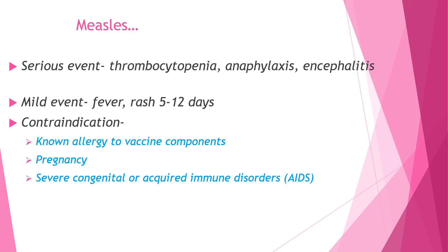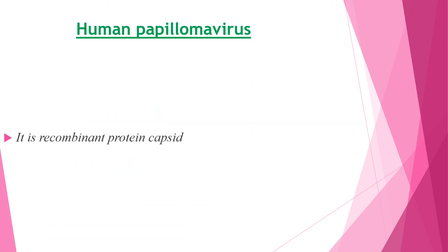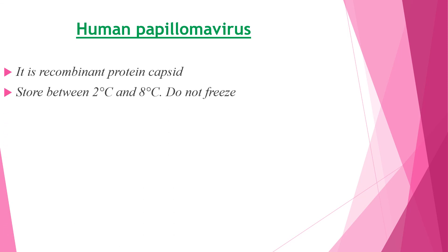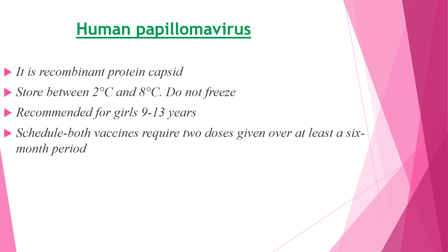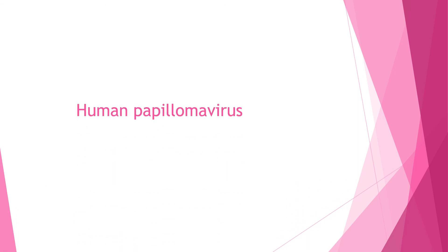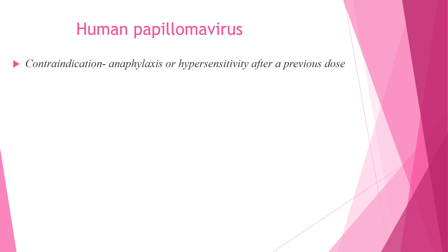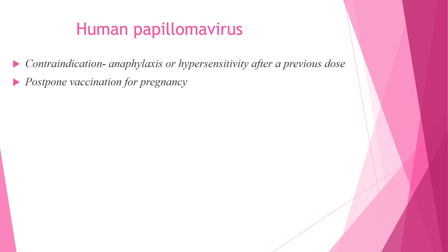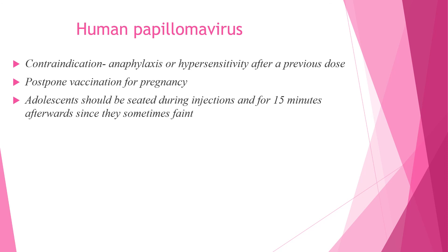Human papillomavirus vaccine is a recombinant protein capsid vaccine. It is stored between two to eight degrees Celsius and should not be frozen. It is recommended for girls between 9 to 13 years. Both vaccines require two doses given over at least a six-month period with a dose of 0.5 ml IM on the deltoid muscle of the upper arm, and there is no booster dose. Contraindication is anaphylaxis or hypersensitivity after a previous dose. Postpone if there is pregnancy. Adolescents should be seated during injection and for 15 minutes afterwards, as they may sometimes faint.